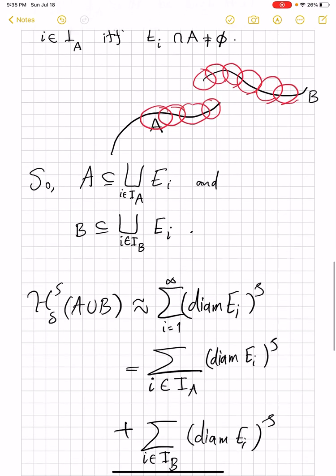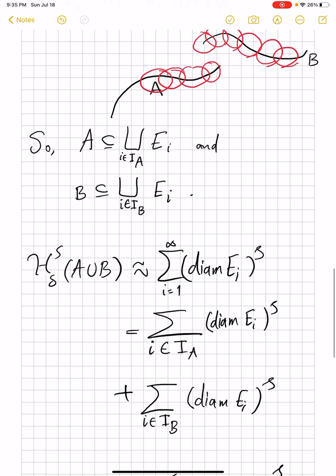So what we can write is that, so we had H^s of the union B pretty close to this summation of diameters to power s. And then, that summation is, of course, you can just divide it up into two summations. I_A and I_B cover all of the integers. Actually, technically this is not correct, because in your E_i's there could be, theoretically, some E_i's which contribute to covering neither A nor B.